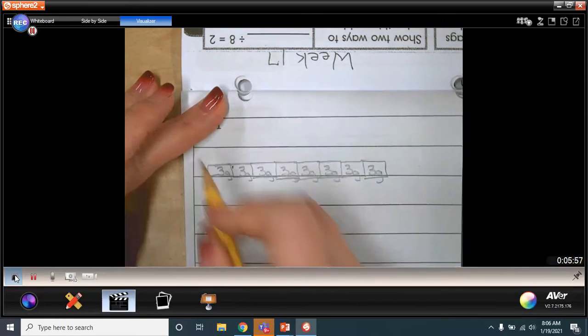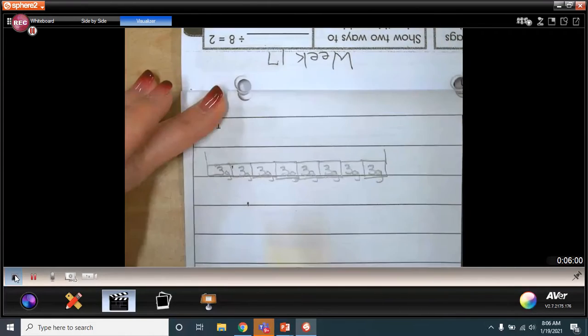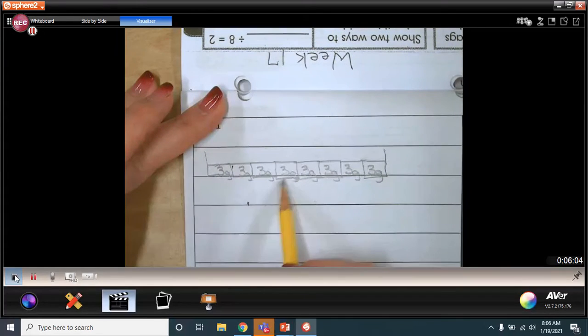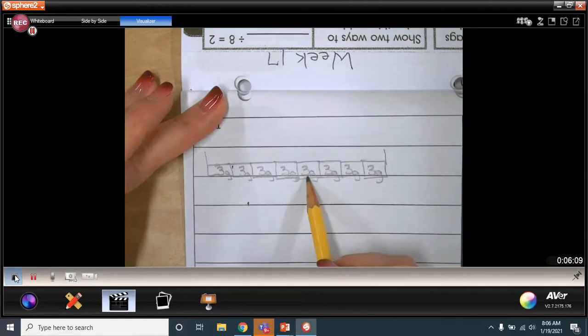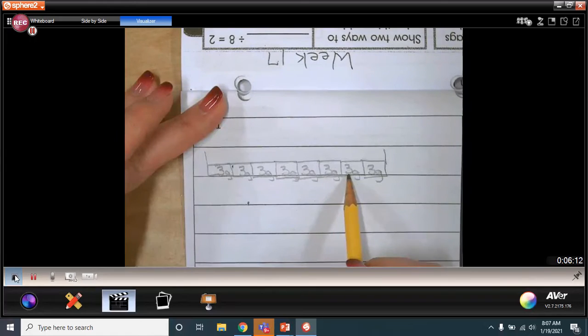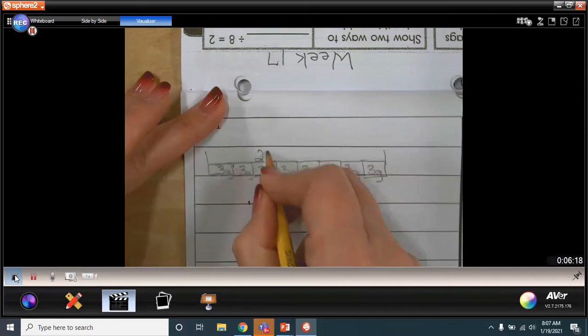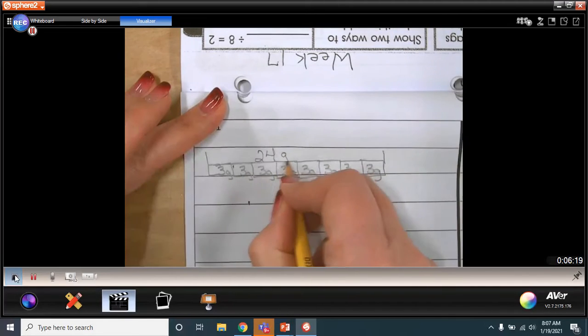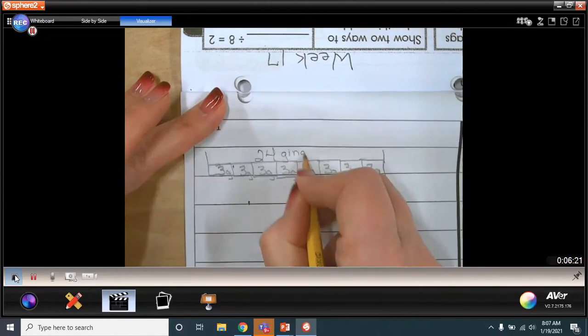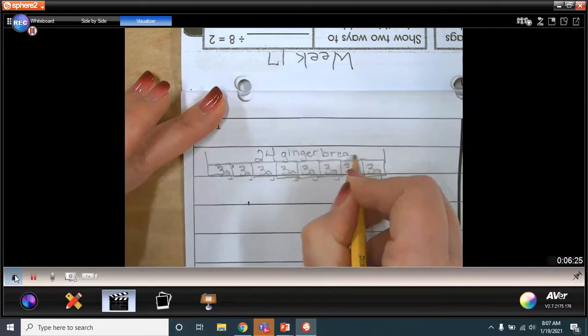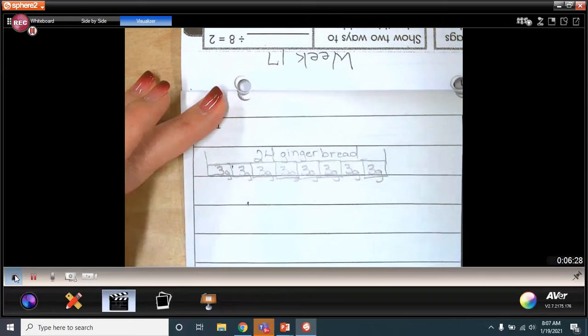So each gingerbread man is going to be represented inside each bar, which represents each girl. Now, if we know how to count by threes, we could say three, six, nine, three more makes 12, 15, 18, 21, and 21 and three more makes 24. So there are 24 gingerbread men that are going to be decorated. Total gingerbread men.